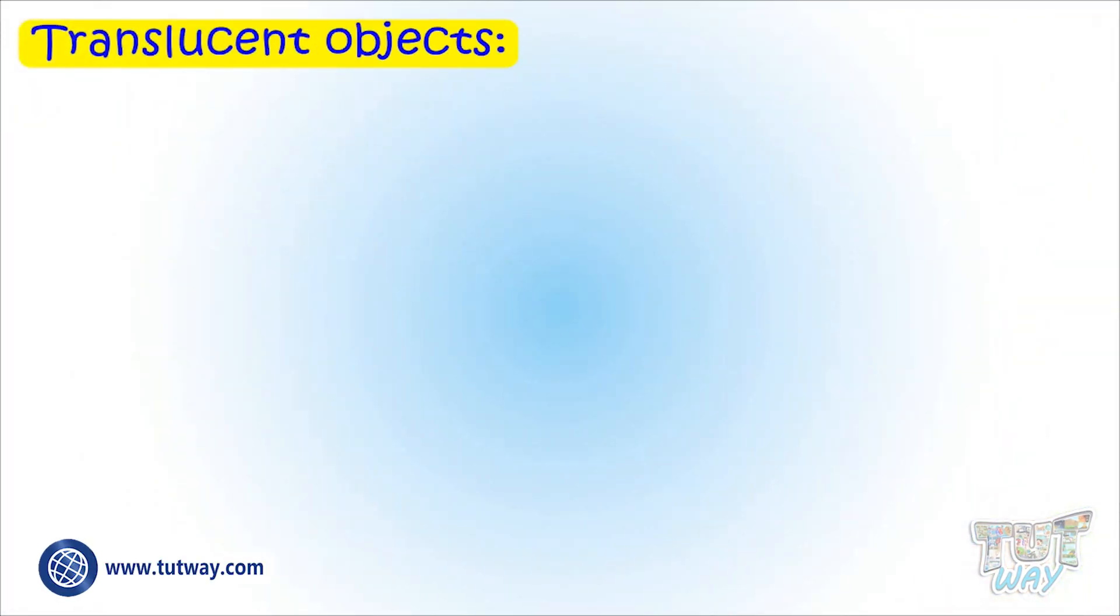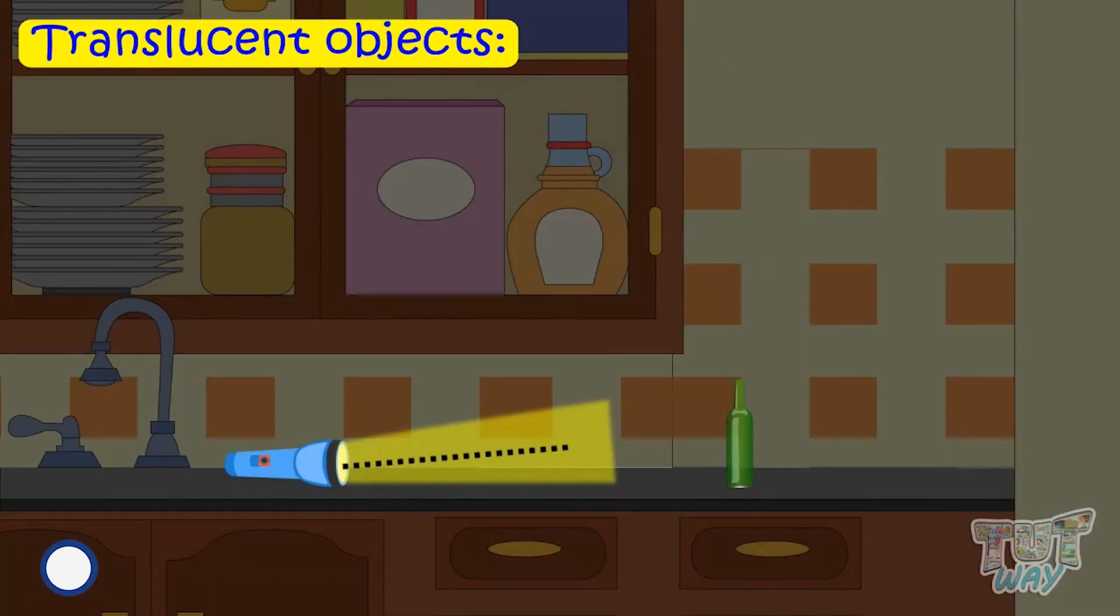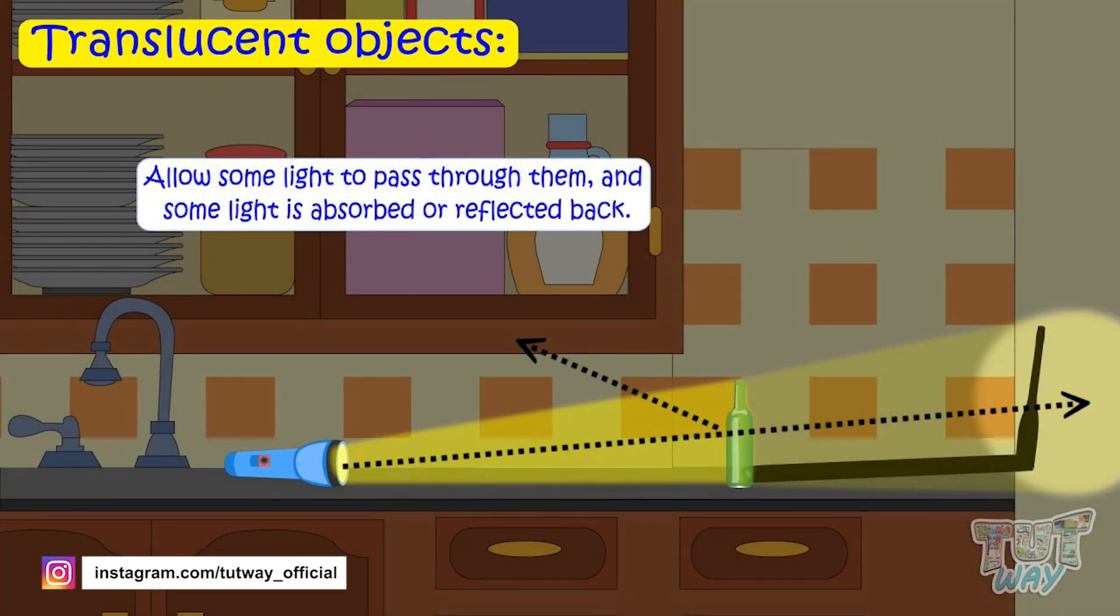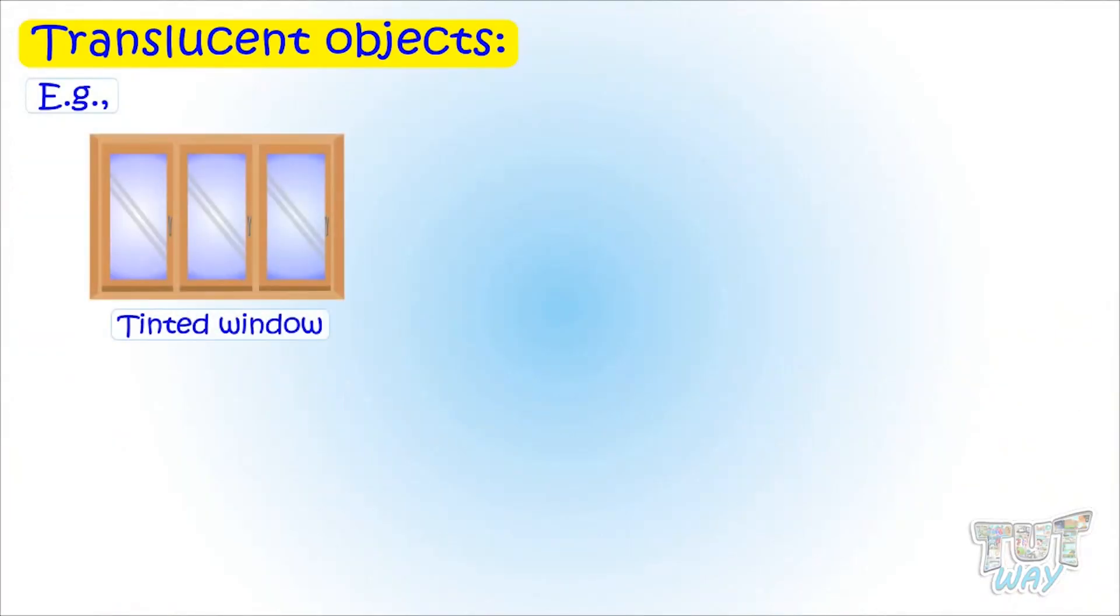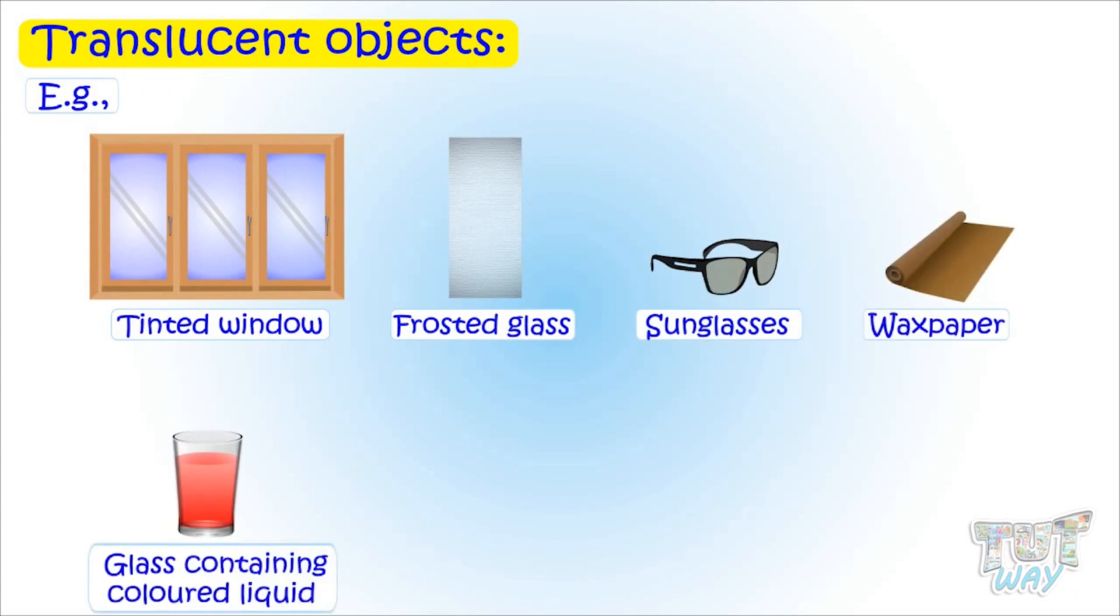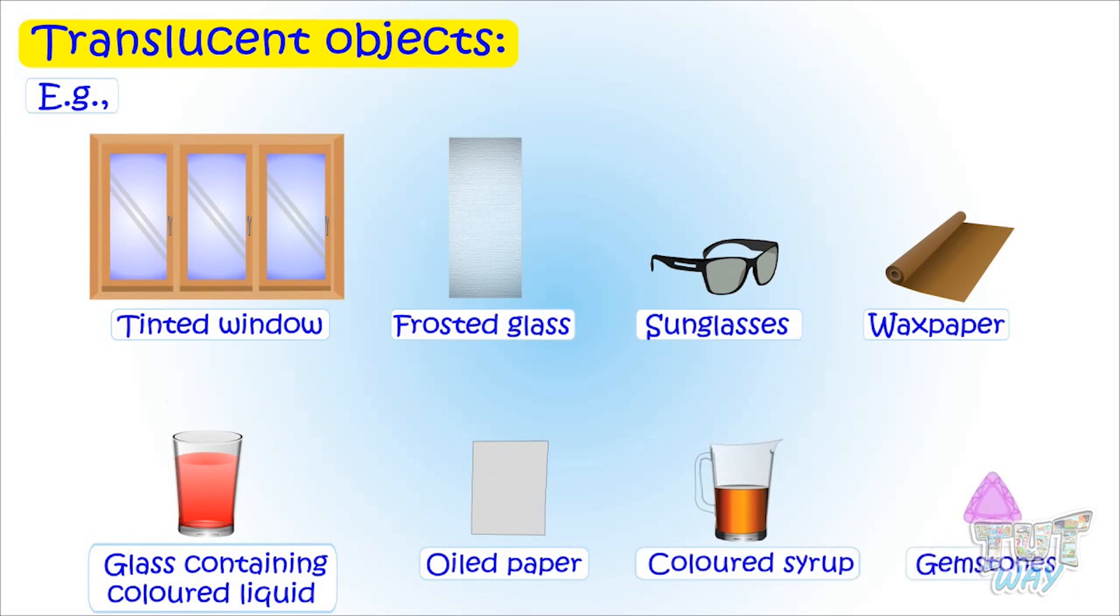Translucent objects. Translucent objects allow some light to pass through them, but not all light. Some light is absorbed or reflected. It can be seen through but not completely. Tinted windows, frosted glass, sunglasses, wax papers, colors, colored liquids in a glass, oiled papers, colored syrups, and certain stones are examples of translucent objects.